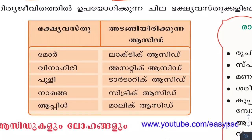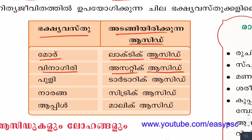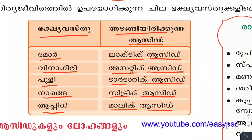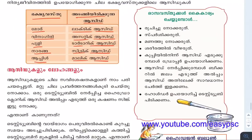The lactic acid, acetic acid (Puli/tamarind), tartaric acid (Narangai/grape), citric acid (orange), and malic acid — these are natural organic acids found in various food sources.